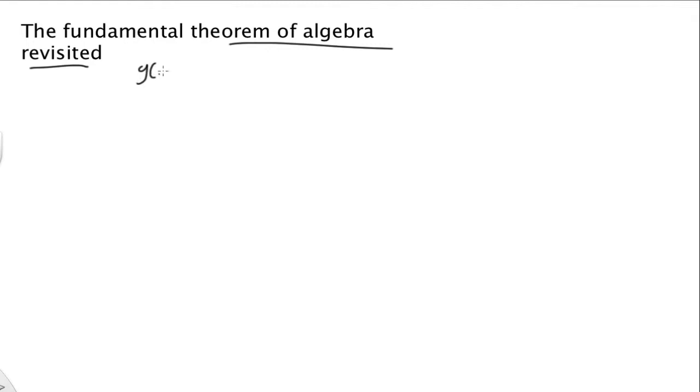So let's talk about what the fundamental theorem of algebra says. If G(z) is some polynomial, then I can write it as follows: a_n z^n plus a_{n-1} z^{n-1} plus a_{n-2} z^{n-2} dot dot dot all the way to a_1 z plus a_0.